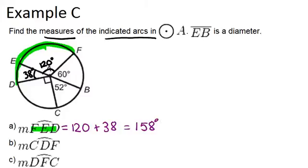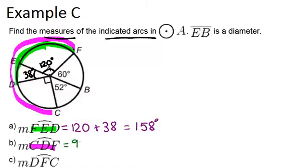Next we find arc CDF. Following C to D to F around the circle, we have three parts: the 90-degree right angle, plus 38, plus 120, which gives us 248 degrees.